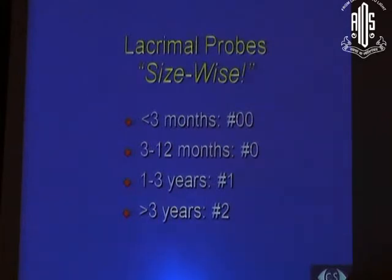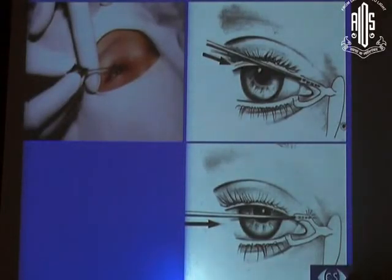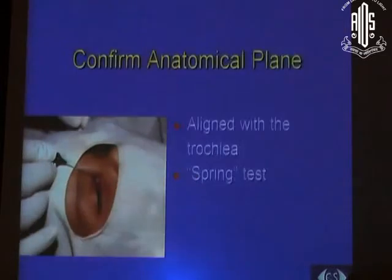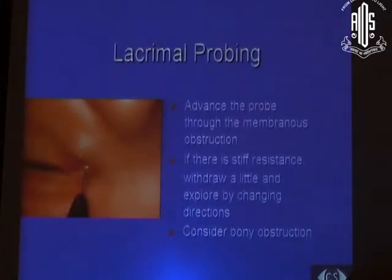Depending on the age of the child, use a particular probe size: in a child less than 3 months old, use a 00 probe; as age increases, use larger probes. Dilate the upper punctum, pull the lateral canthus laterally to straighten the canalicular system, and insert the probe. Advance medially until you hit a hard stop at the medial wall of the sac, then turn the probe gently downward, laterally, and posteriorly. Encounter the valve of Hasner obstruction — confirm correct positioning with a spring test — then gently advance to break through, which you will feel or hear as a pop.